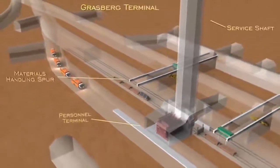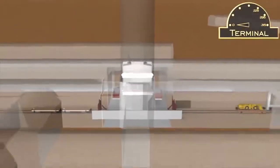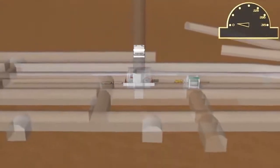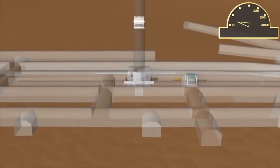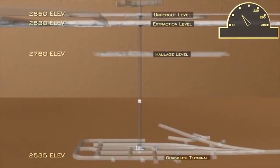As we enter the Grasberg terminal, workers and materials will be hoisted up to the appropriate levels in the Grasberg block cave. In addition to the terminal level, there are three additional levels.